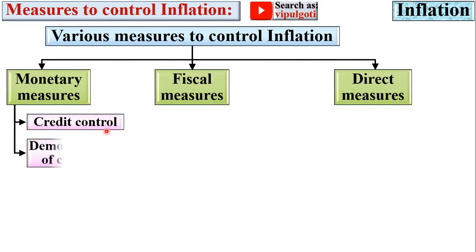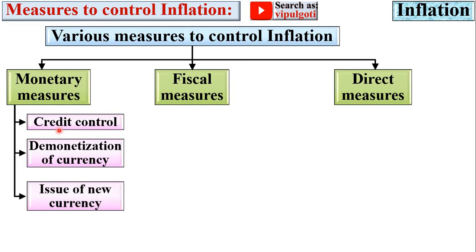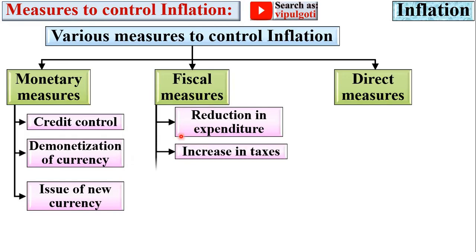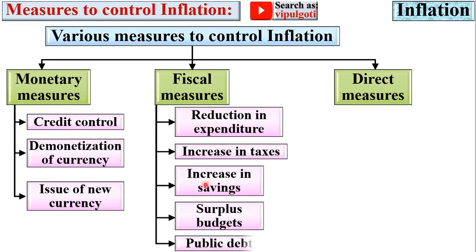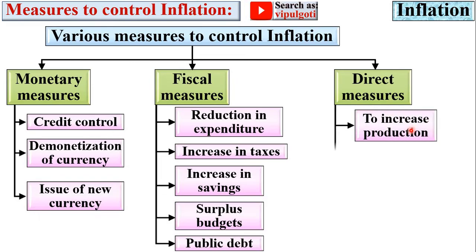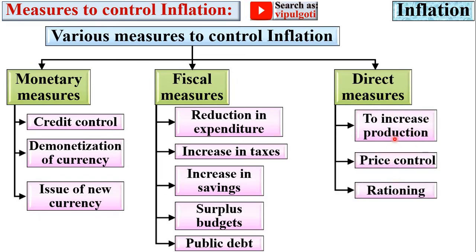Monetary measures are divided into three categories: credit control, demonetization of currency, and issue of new currency. Fiscal measures are divided into five groups: increase in taxes, increase in savings, surplus budgets, and public debt. Direct measures are divided into three categories: increase in production, price control, and rationing.